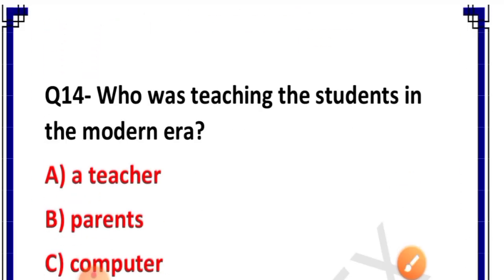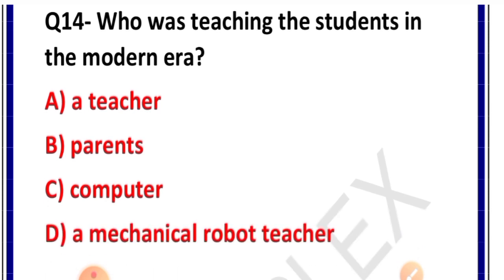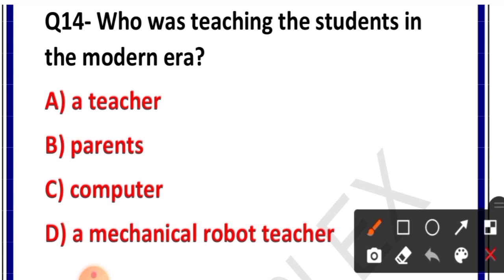Question number 14: Who was teaching students in the modern era according to this chapter? Options: A teacher, parents, computer, or a mechanical robot teacher. Correct answer is option D — a mechanical robot teacher.